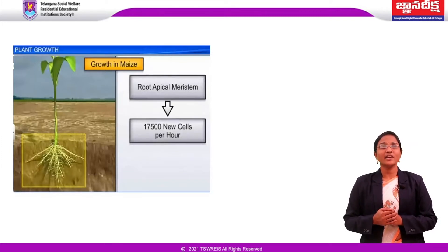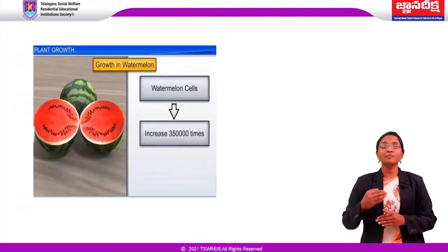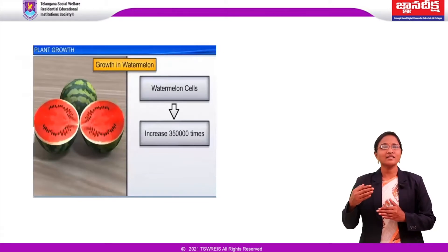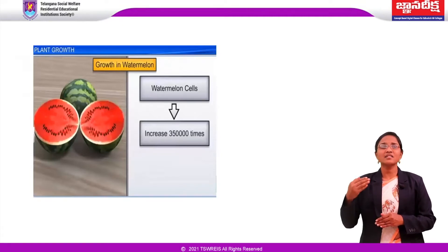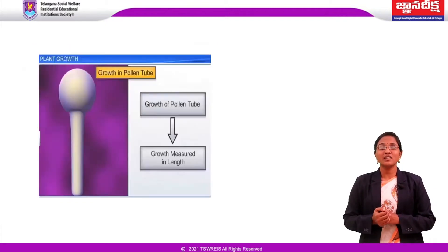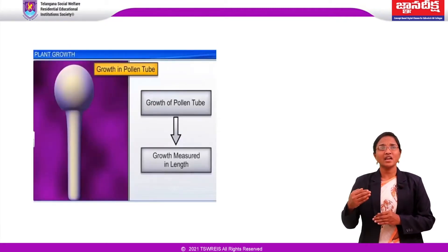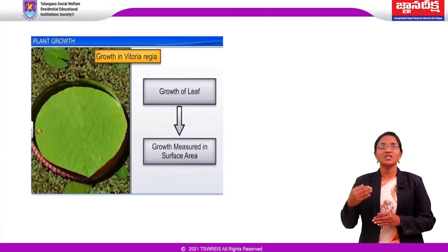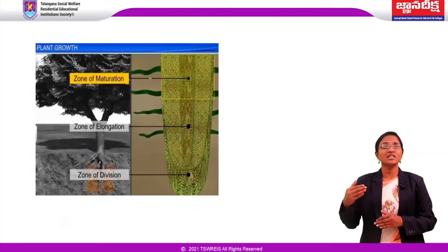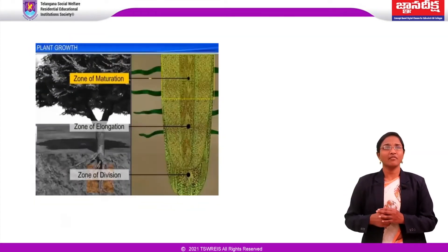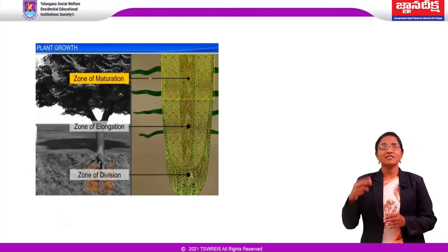Cells in a watermelon may increase in size by up to 350,000 times. In the former, growth is expressed as an increase in cell number; in the latter, growth is expressed as an increase in cell size. The growth of a pollen tube is measured in terms of its length, and an increase in surface area denotes growth in a dorsiventral leaf. The period of growth is generally divided into three phases: meristematic phase, elongation phase, and maturation phase.